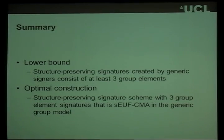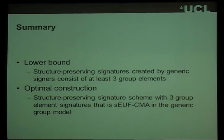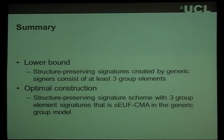To summarize: we have a lower bound of at least three group elements and at least two verification equations for structure-preserving signatures, and we have a construction that achieves exactly that. Thank you.